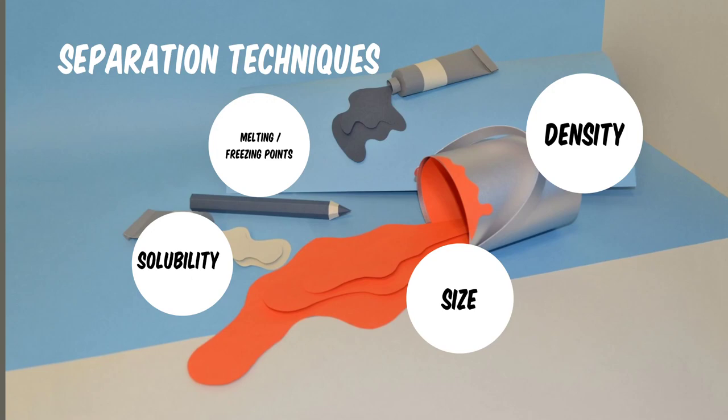The first is going to be solubility, the second is going to be the melting and freezing points, also the condensation or evaporation points. We're going to be concerned with size — how we separate things based off of size — and the last one is going to be density, or how heavy something is compared to the size that it is. All of these are things that are fairly easy for us to separate out, and we do this type of separation quite frequently.